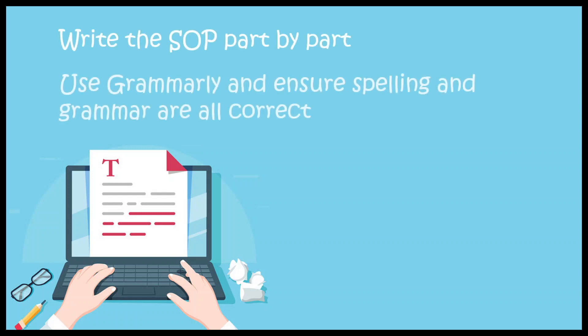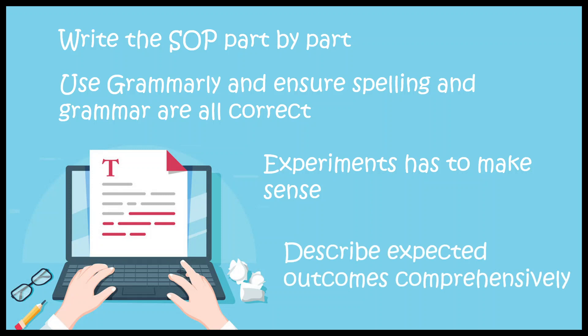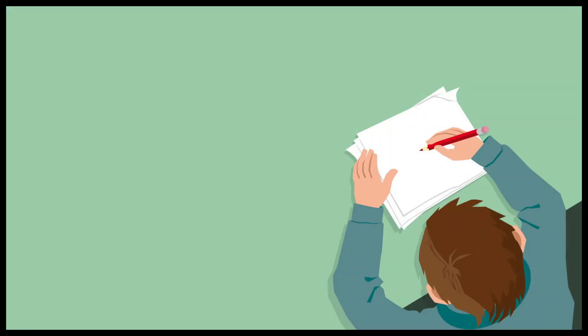When putting everything together, do it part by part. Use Grammarly or any spellcheck software to ensure correctness — that's the minimum criteria. The experiments you propose must make sense. It's not enough to say 'I'll do RNA sequencing' or 'I'll do microscopy' — you have to justify why that particular experiment is appropriate for answering your hypothesis. In the expected outcome section, describe what can come out of your experiment, and do so comprehensively and directly.